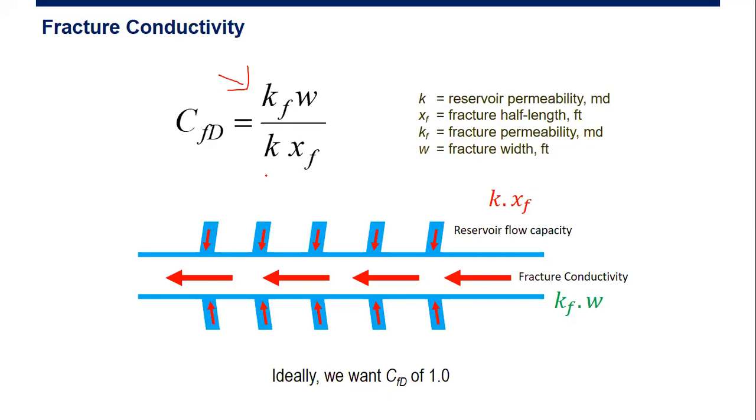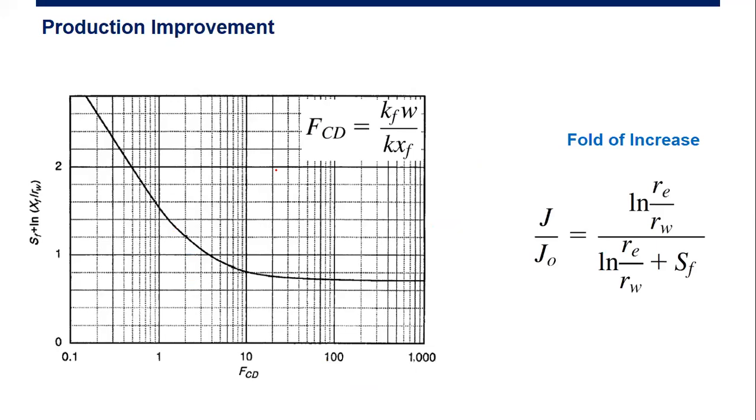From CFD, from dimensionless conductivity, we can calculate the skin factor because of the fracture. So here we have a plot. On the horizontal axis we have CFD or FCD, the same, and here we have skin plus logarithmic natural of XF divided by RW.